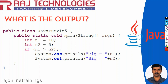In this puzzle, in the main method we have taken two variables: n1 is 10 and n2 is 5. We have an if condition checking whether the value of n1 is greater than n2, and observe we have ended with two semicolons, and we are printing big equal to n1 and big equal to n2.